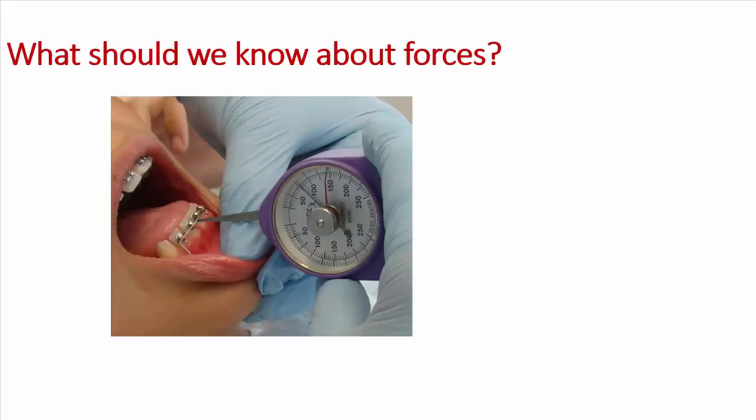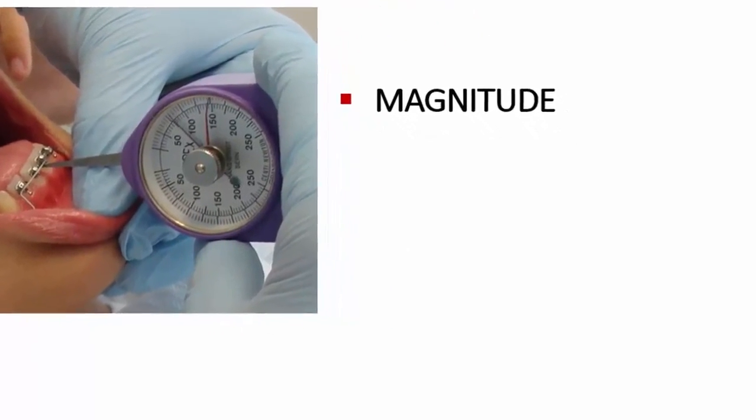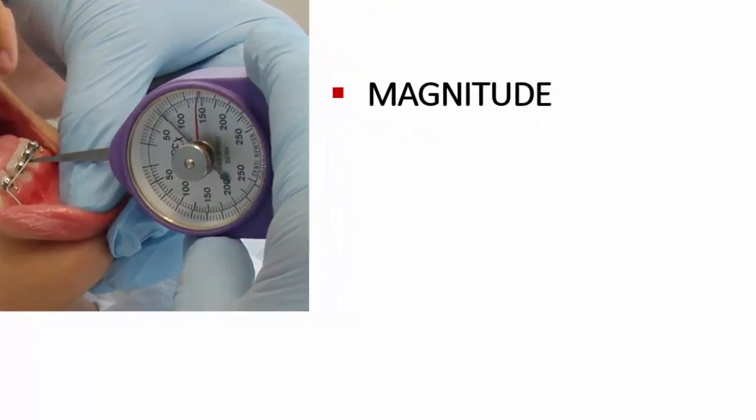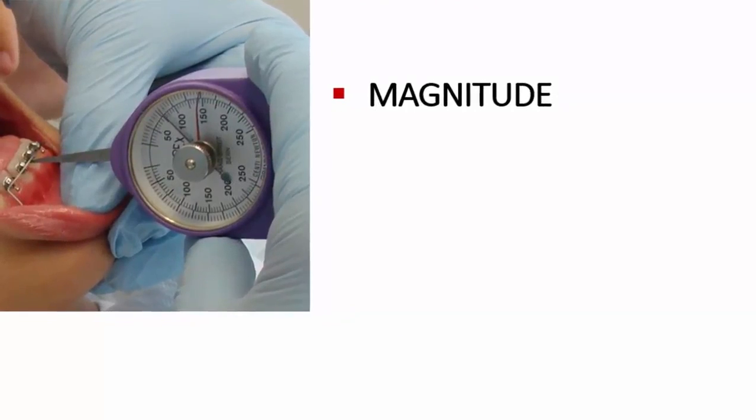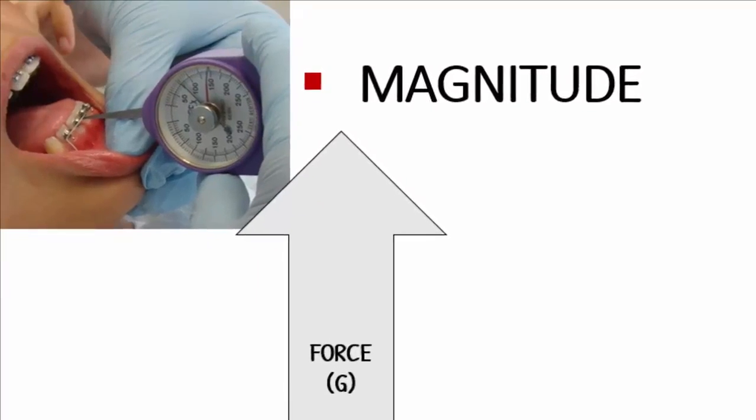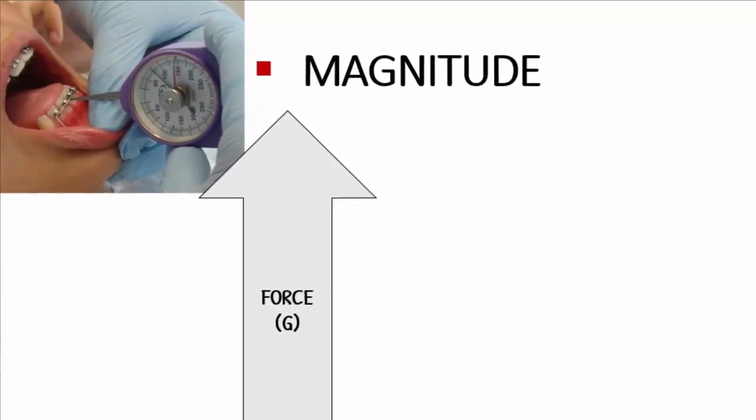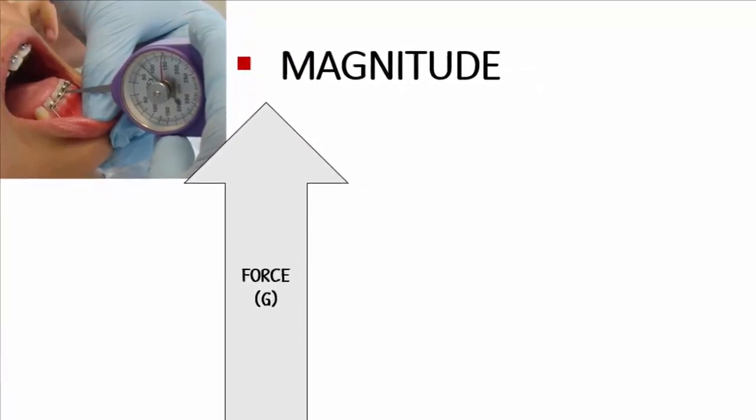I consider that, as specialists, we need to understand the variables of the orthodontic force very clearly in order to provide the best for our patients. Let us see then the three important variables of the orthodontic force from the biological point of view. These are the magnitude or intensity, the duration and the frequency of application. I believe that the most relevant variable for the orthodontist is the magnitude of the force, since it is the one over which we have greater possibility of control.